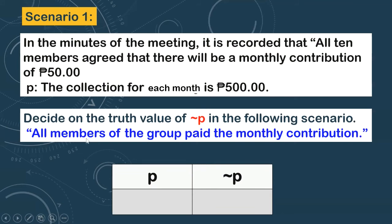The scenario says: 'All members of the group paid the monthly contribution.' To get the truth value of P, go back to the given proposition P. Do you think they would collect 500 pesos? Yes — because the scenario says all members paid 50 pesos each, and there are 10 members: 10 times 50 equals 500. So the proposition 'The collection for this month is 500 pesos' is true. The negation of a true statement is false. So the truth value of not P is false in this scenario.